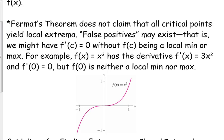At x equals zero, x³ changes what we call concavity, which is what we're going to talk about in the next couple of days. This part of the curve is concave down, and this part of the curve is concave up. But that's not a local minimum or maximum — even though zero is a critical number, that's not a minimum or maximum for this function.